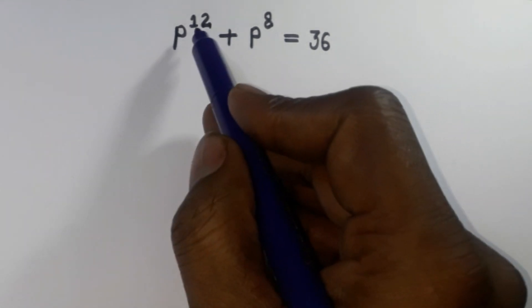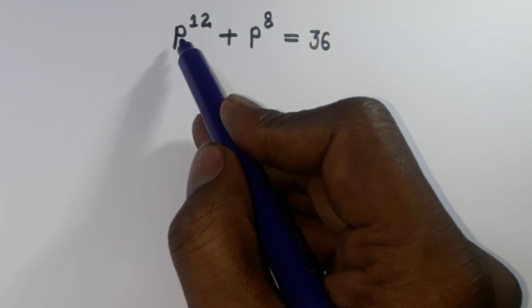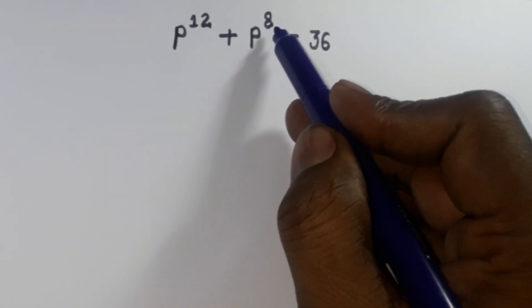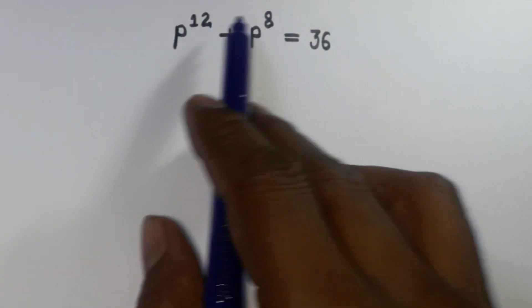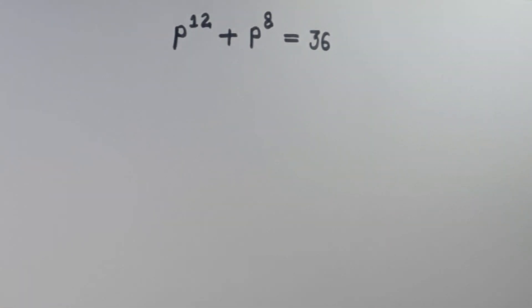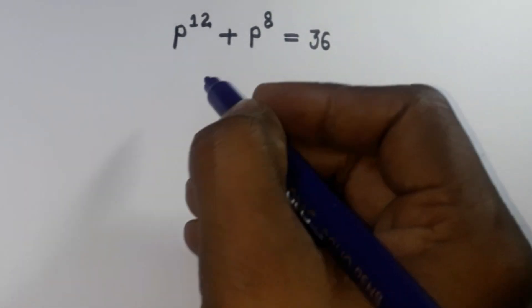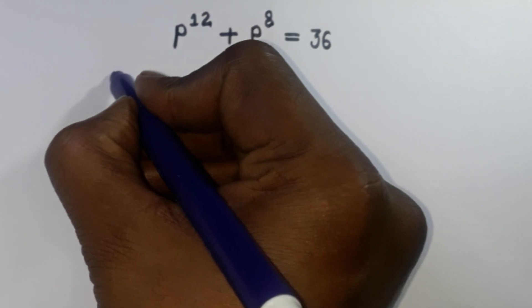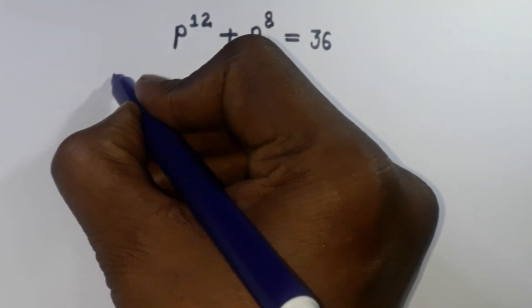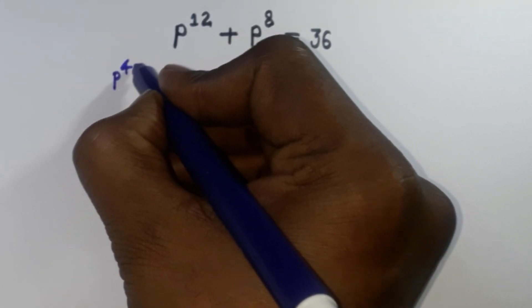We have 12 as the power of 4p and we have 8 as the power for p. We can see that 12 and 8 have a common factor — 4 is common: 4 times 3 is 12, and 4 times 2 is 8. So I am considering p to the power 4 as one variable, which I will call a.